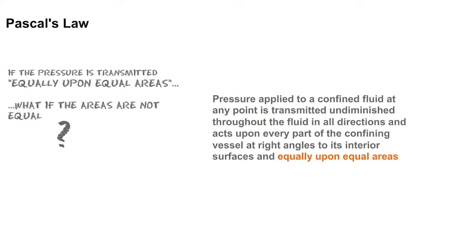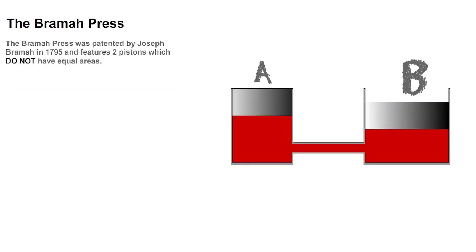To understand the answer to this question, we will look at the Brahma Press, a simple hydraulic system with two pistons which do not have equal areas. This is the idea behind any simple hydraulic system and is used to multiply force. So let's now see how it works.